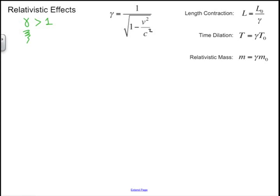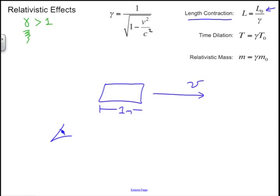Now let's look at three interesting things that happen when you start to approach the speed of light. First, there's length contraction. The subscript zero represents what a stationary observer would measure. If something is traveling in one direction and there's a stationary observer to the side, the actual distance might be 1 meter, but as v increases and you go very fast, there's a contraction in the direction of motion — it gets narrower. The stationary observer no longer sees it as 1 meter; it's something much less if you're really close to the speed of light.